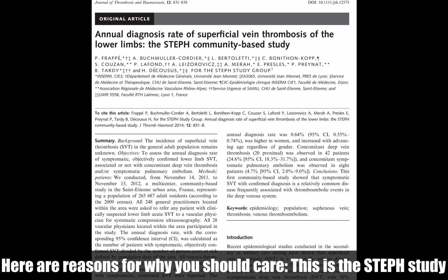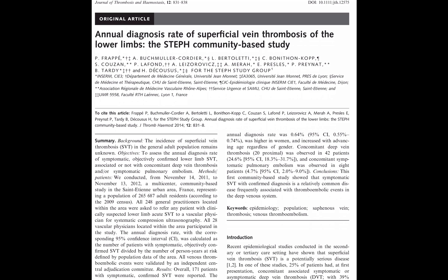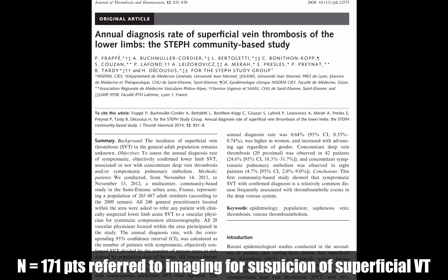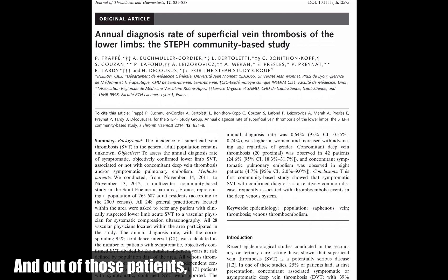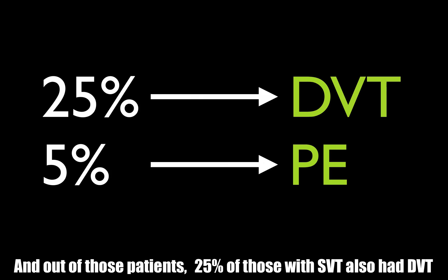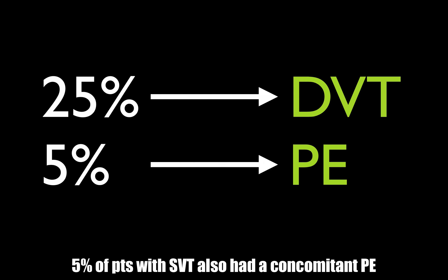This is the STEF study. It included 171 patients, and they found that out of those 171 patients referred to ultrasound for suspicion of superficial clot, 25% did have the superficial venous thrombosis but also had a concomitant DVT, and 5% of those had a PE. So basically 25% of your patients with SVT also have a DVT.